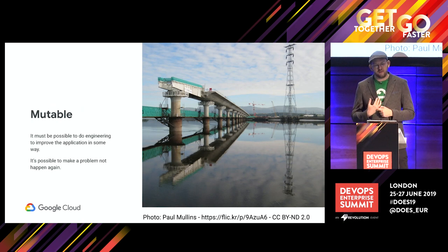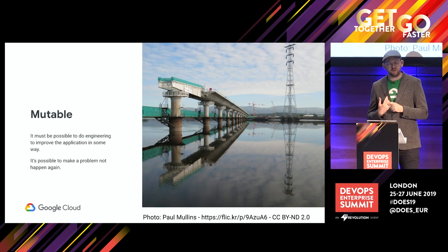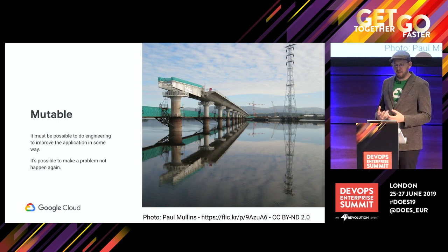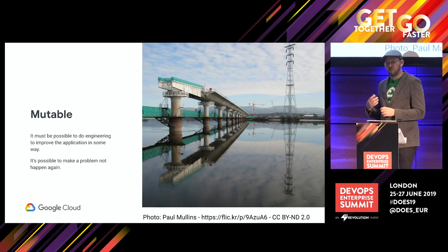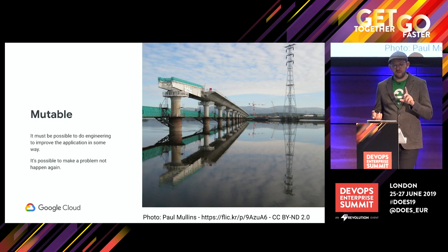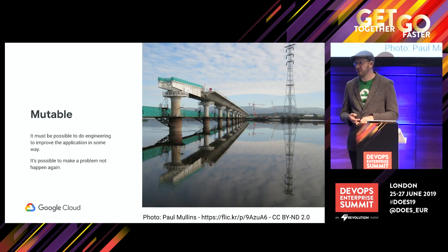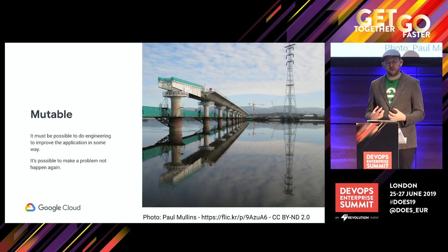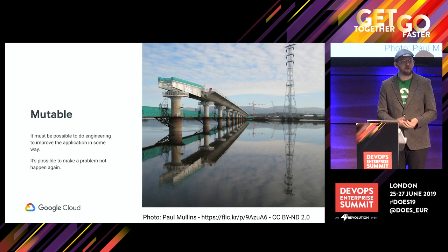The last thing you need for your site reliability engineering team to provide value, once they're working on a system, is a way to make that system better over time — and you need to enable that. The mutability of an application refers to how possible it is to change the application in order to make it more reliable or decrease the cost of operation. If an SRE is spending a maximum of 50 percent of their time doing operational aspects — that toil — then the remainder of their time should be spent making things better. That's why we need mutability for a system to be one you would apply site reliability engineers to.